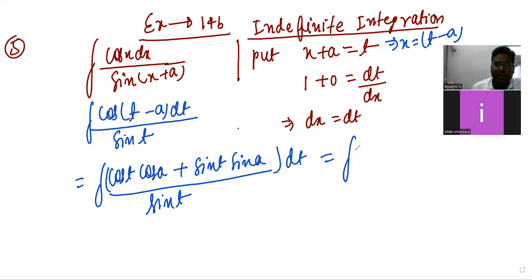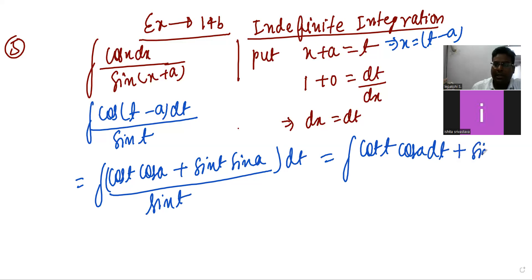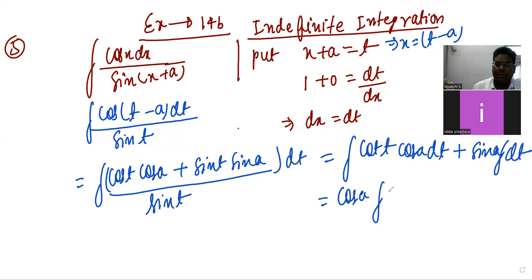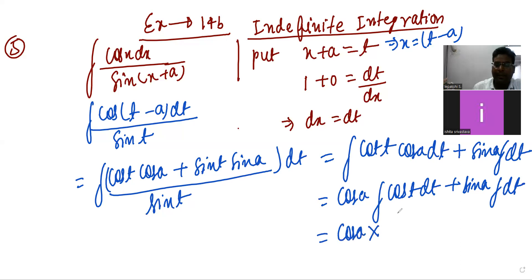Divide separately: cos over sin becomes cot. So it is cot(t)·cos(a) dt plus sin(a) integration of dt — the sin(t) terms cancel, leaving integration of dt. Take cos(a) as a constant outside: integration of cot(t) dt plus sin(a) integration of dt. Integration of cot is log|sin(t)|.